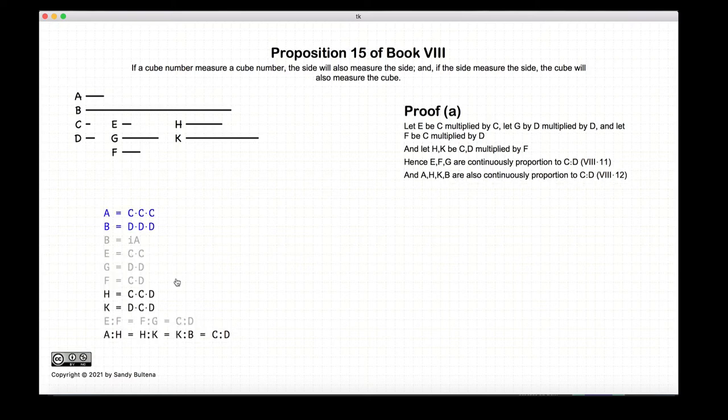Likewise we have that a, h, k, and b are in continuous proportion again according to Proposition 12 of this book, and the ratio is going to be equal to c to d.